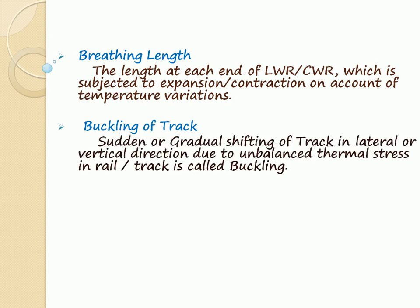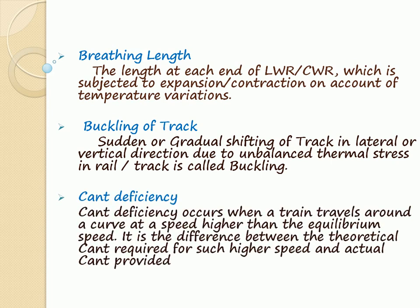Buckling of Track: Sudden or gradual shifting of track in lateral or vertical direction due to unbalanced thermal stress in the rail is called buckling. Cant Deficiency: Cant deficiency occurs when a train travels around a curve at a speed higher than the equilibrium speed. It is the difference between the vertical cant required for such higher speed and the actual cant provided.